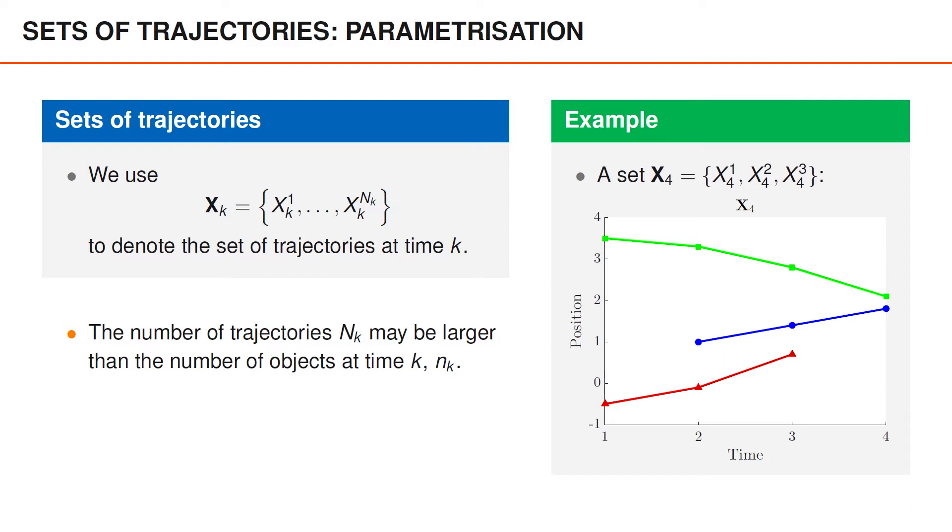As you might have noticed, I use capital N_K to denote the number of trajectories in the set of trajectories. If we are tracking all objects that have been present up until time k, that number is not always the same as the number of objects that are present at time k, denoted lowercase n_k. For instance, in the example to the right, capital N_4 is 3, whereas lowercase n_4 is 2. It's important to note that the set of trajectories is a random finite set, and that we are able to leverage on many of the things that we already know about such sets, including things like the convolution formula.